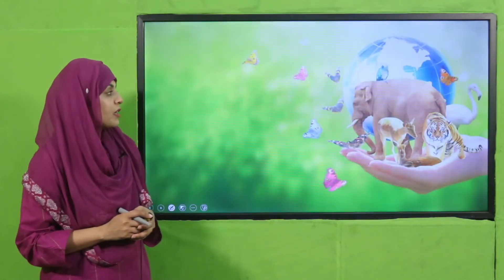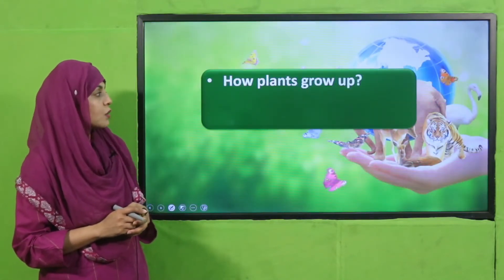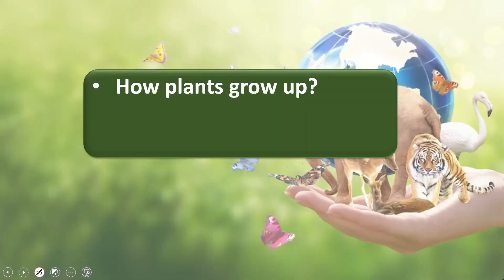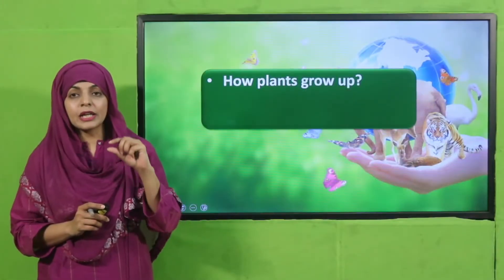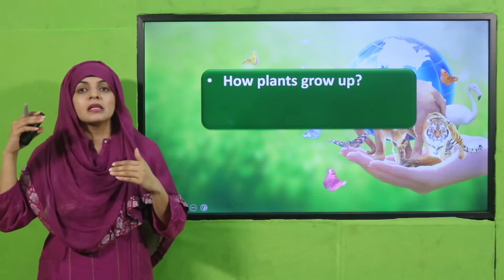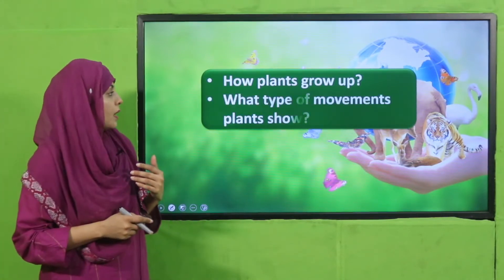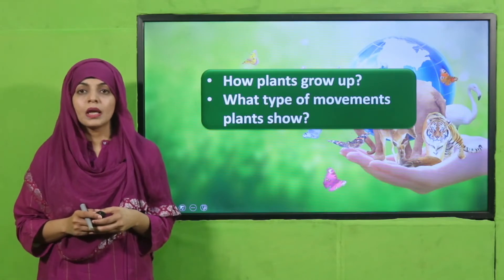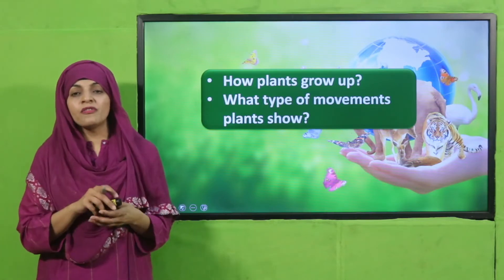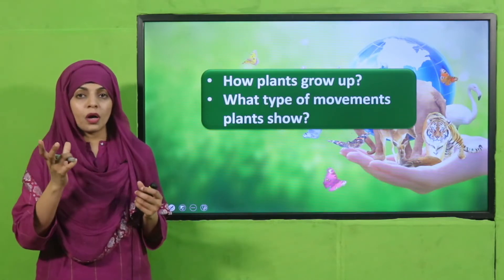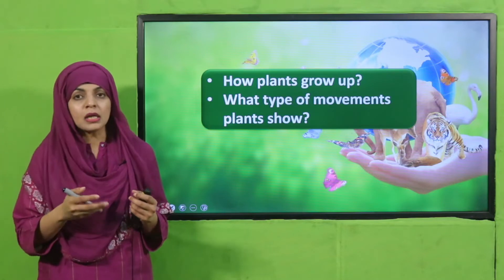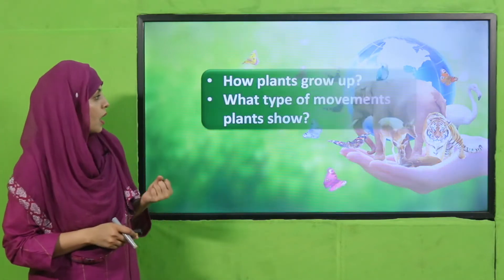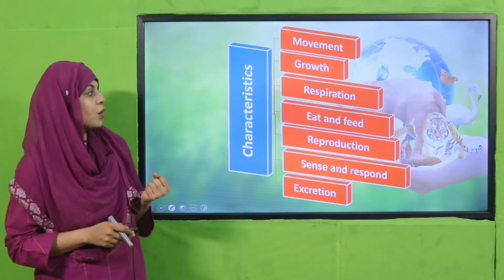Now let's move to the pre-reading questions. How do plants grow up? They grow from a seed into a tiny plant and then keep growing. What type of movements do plants show? They move when touched, and they move in the direction of the sun. This is how plants show movement.